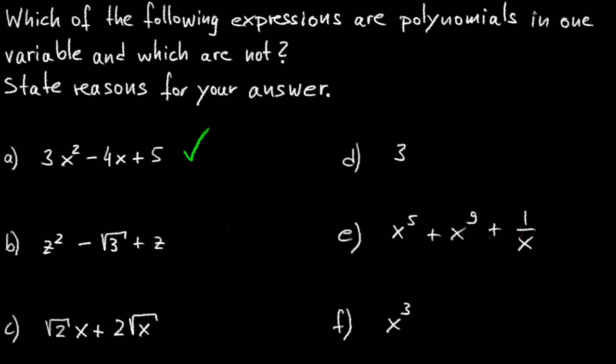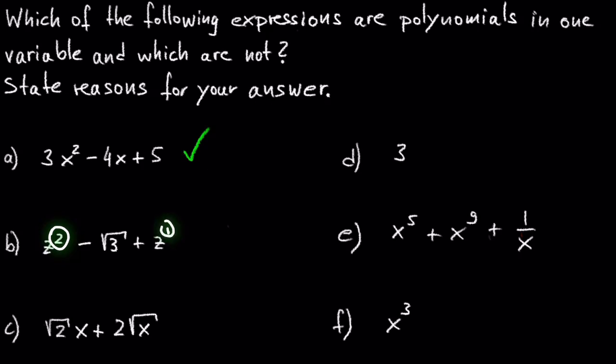In B we have z squared minus the square root of 3 plus z. Here we have one variable z, which has the exponents 2 and 1. And the negative square root of 3 is a real number. So this is also a polynomial.